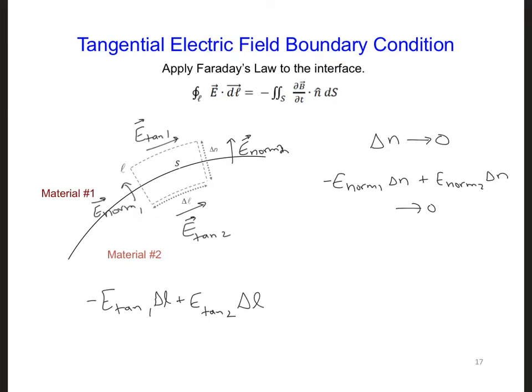Then on the right side of Faraday's law, we're supposed to calculate the total flux, dB/dt, passing through the area of the surface in the delta n direction.